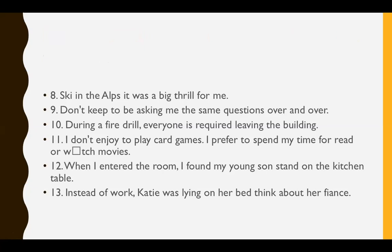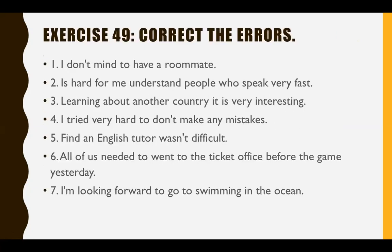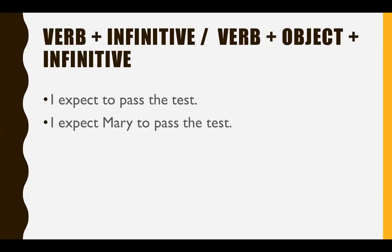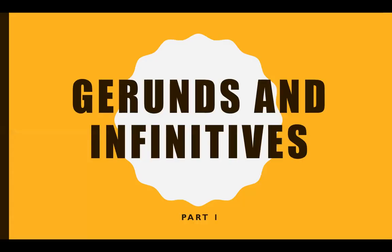This exercise covers all the issues discussed above. Each sentence contains an error — you need to find it and correct it. For example: 'I don't mind to have a roommate' — this is wrong because 'mind' must be followed by a gerund. It should be 'I don't mind having a roommate.' Go through the sentences, find the errors, fix them, and practice saying them. When dealing with gerunds and infinitives, you need to memorize which verbs take which form — this must become second nature.